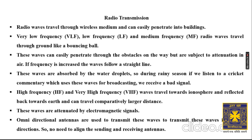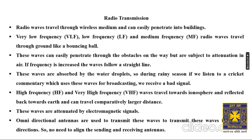There are two more variations of radio waves: HF (high frequency) and VHF (very high frequency). These travel toward the ionosphere first, which then reflects the radio wave back toward Earth. Because they travel via the ionosphere rather than bouncing along the ground, they cover a comparatively very large distance.